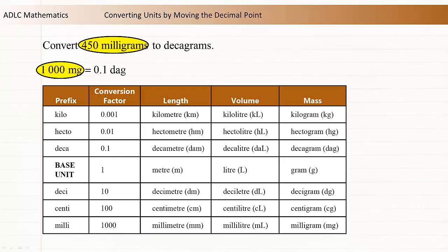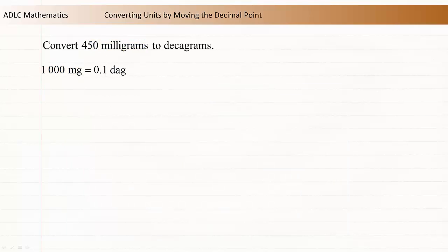The number of milligrams is given, so write that unit of the conversion ratio first. Now count the number of times the decimal moves. Start at the decimal point after 1000, and count the number of moves required to change 1000 into 0.1.